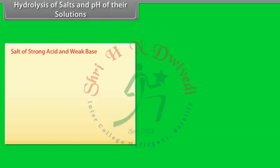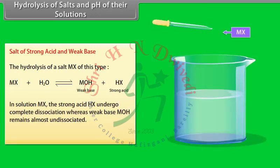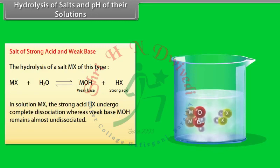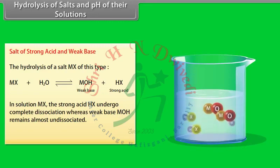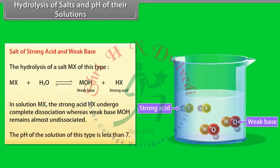For a salt of a strong acid and a weak base, the strong acid HX undergoes complete dissociation whereas the weak base MOH remains almost undissociated. The pH of this type of solution is less than 7.